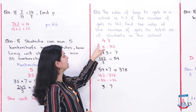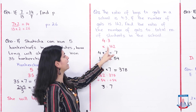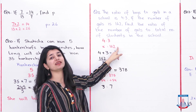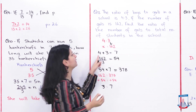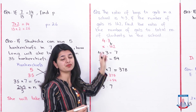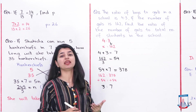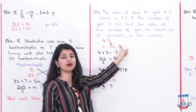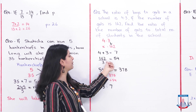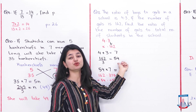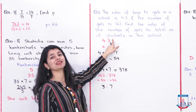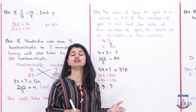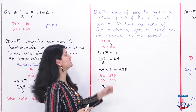First, we set up the proportion: boys to girls is 4:3, and we know girls are 162 but boys (x) are unknown. Since 3 parts equal 162, we divide 162 by 3 to find that 1 portion has 54 students. Total units are 4 plus 3 equals 7. So there are 7 total units, 4 units of boys and 3 units of girls, with each unit being 54 students.